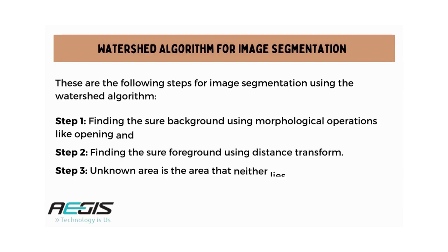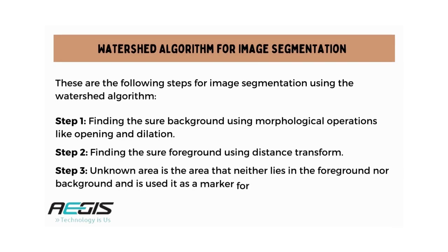Let's understand the watershed algorithm for image segmentation. These are the following steps: First is finding the sure background using morphological operations like opening and dilation. Second is finding the sure foreground using distance transform. Third, the unknown area is the area that neither lies in the foreground nor background, and is used as a marker for the watershed algorithm.